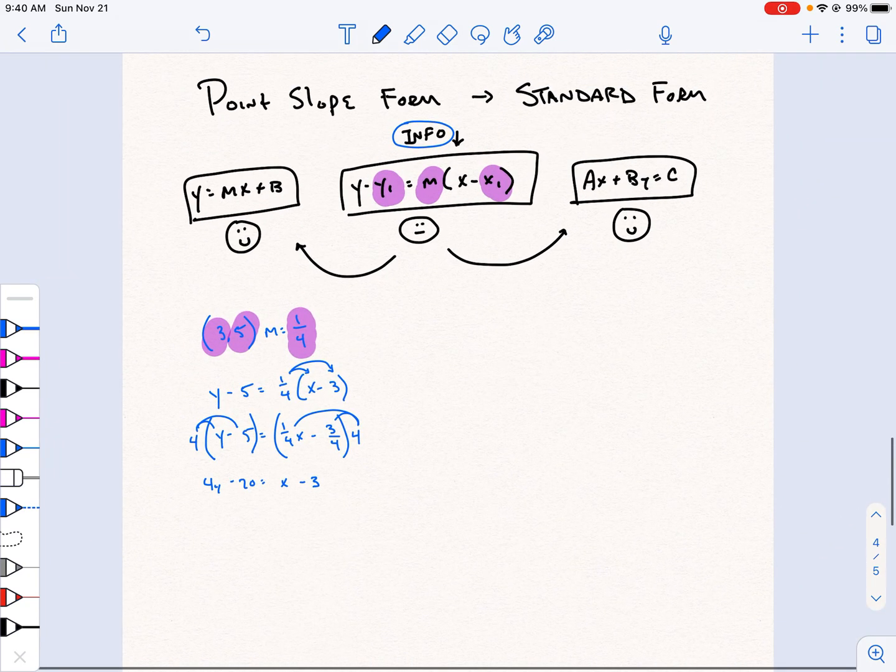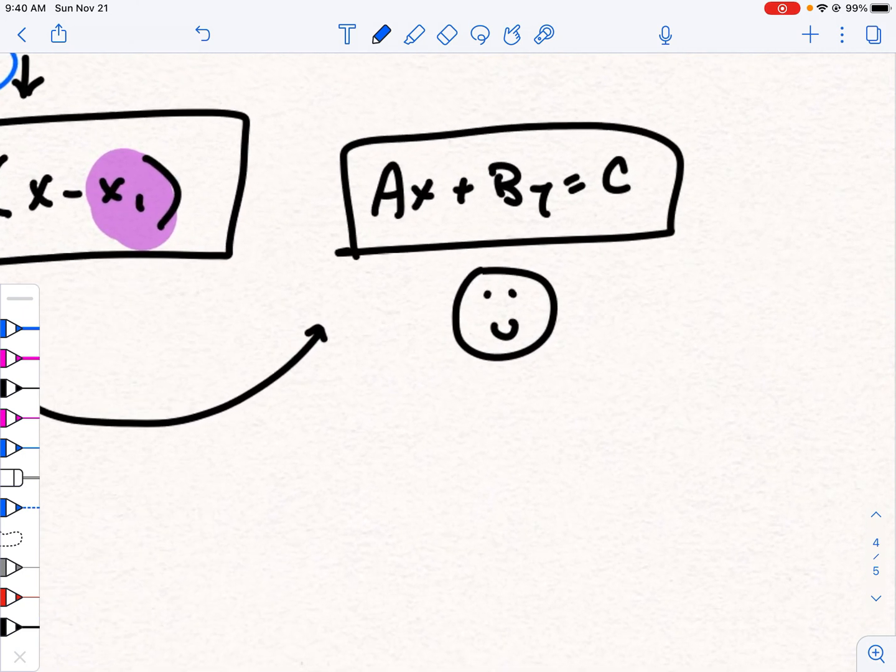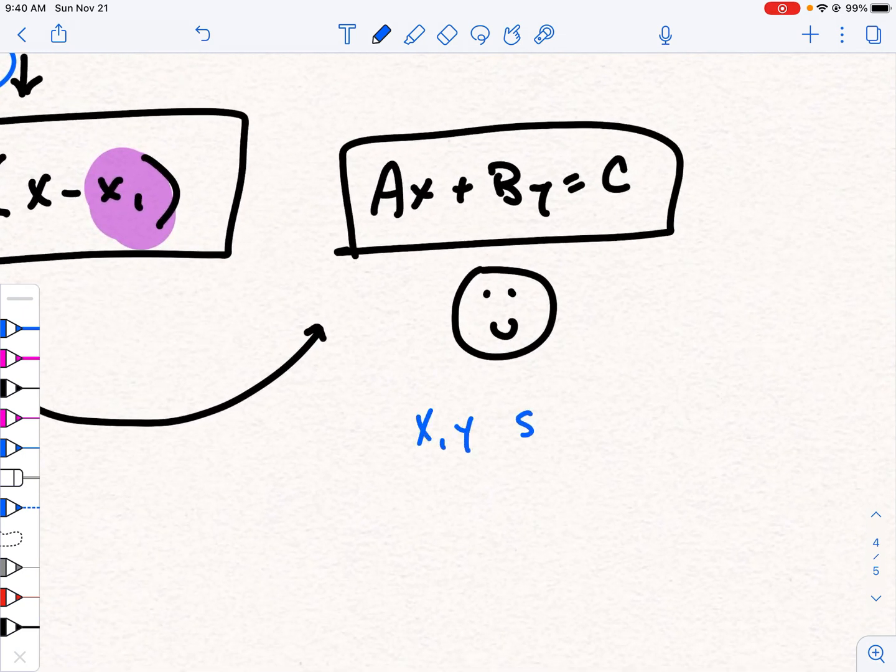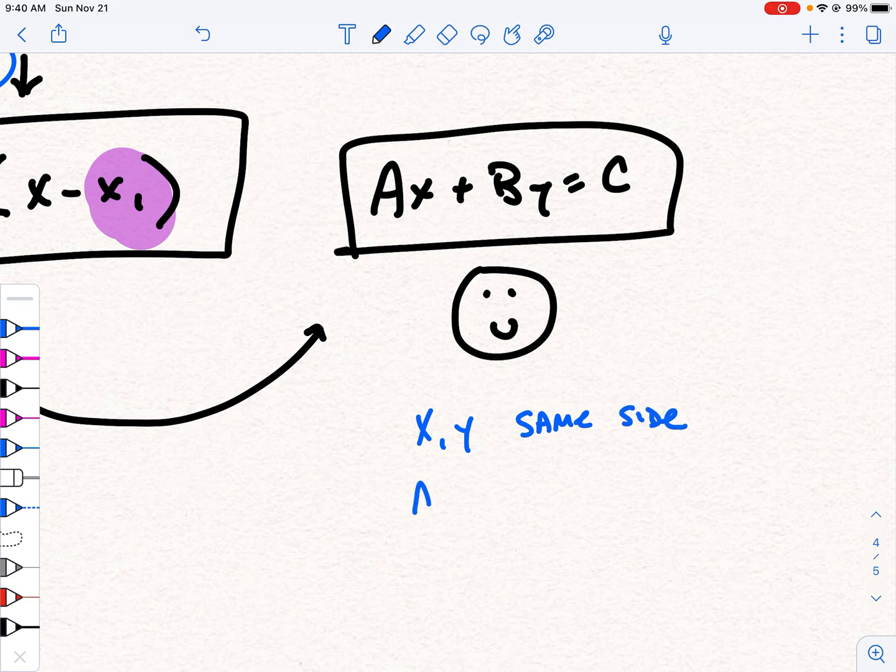And then depending on what you're going to do, and our objective here is to turn this thing into standard form. What you're going to notice about standard form is that the x and the y are on the same side. And there's some other rules here as well. The thing that's in front of x is always positive.